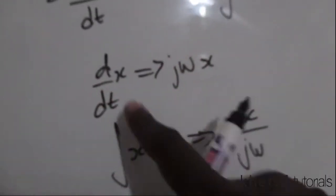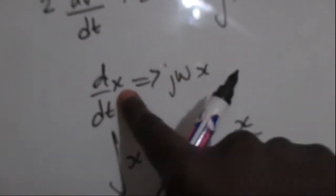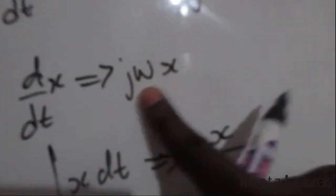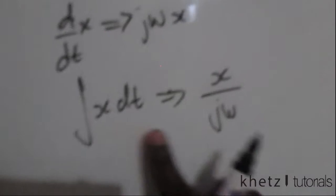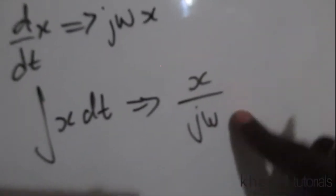Just have this in mind: if you want to differentiate a certain variable, let's say x, then you're going to say jωx in the complex domain, and if you want to integrate you're going to say that variable divided by jω.